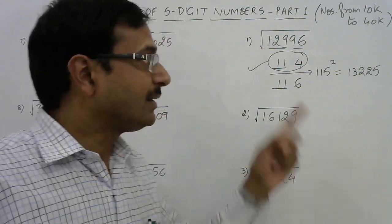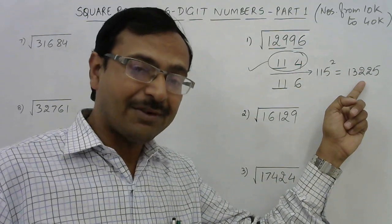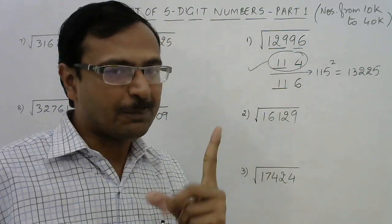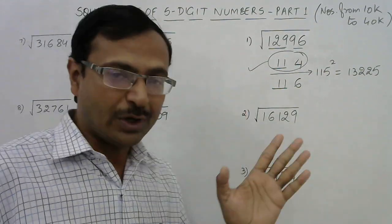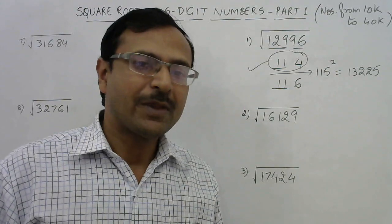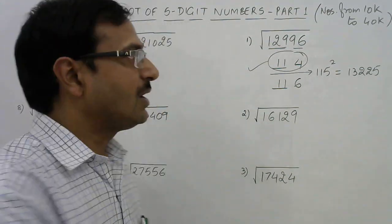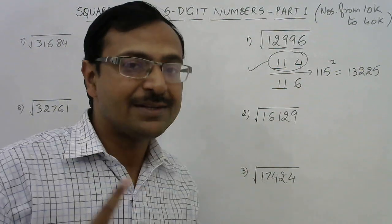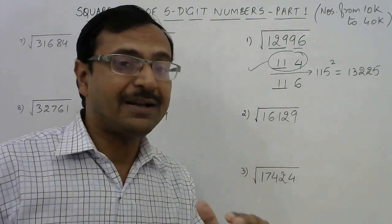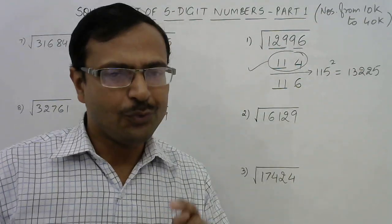Suppose this number would have been more than 13225, then our answer would have been the larger option. Pick up your calculators and check: 114 multiplied by 114 equals 12996. So at first it might look a little lengthy, but with subsequent examples you are going to feel very comfortable.